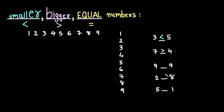Now we have 9 and 9. These are two same numbers, so we will put the equal-to symbol — 9 is equal to 9. Now pause the video and think about the two blanks and put the proper symbol. We have two numbers, 2 and 8. As we know, 2 is spoken first, then 8, so we will put the smaller symbol — 2 is smaller than 8. The mouth of the symbol is open towards 8, which is the bigger number.